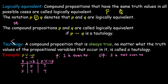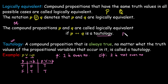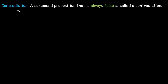Going back to the logically equivalent definition: if we take the biconditional operator between two compound propositions and we are always getting a tautology — meaning the statement is always true — then we call those two compound propositions logically equivalent, and we can write P is logically equivalent to Q.